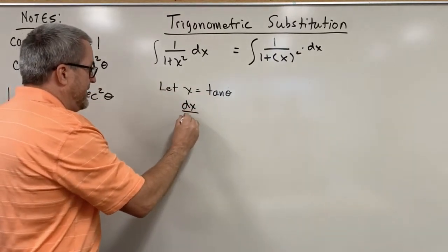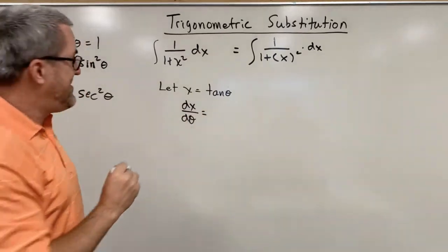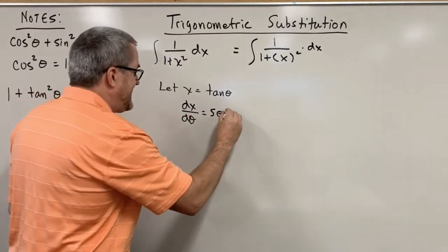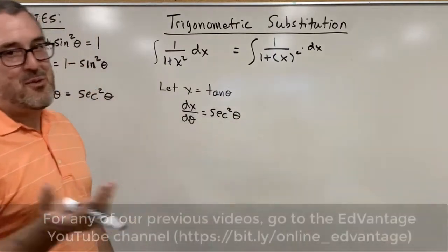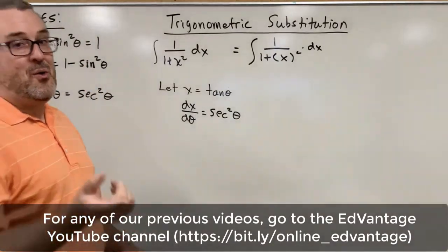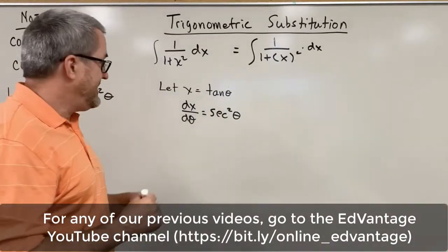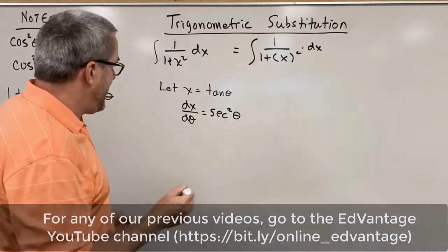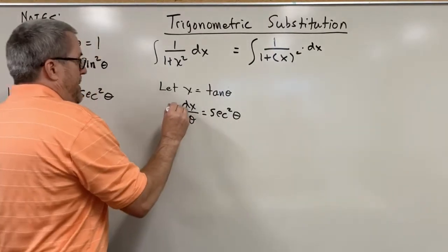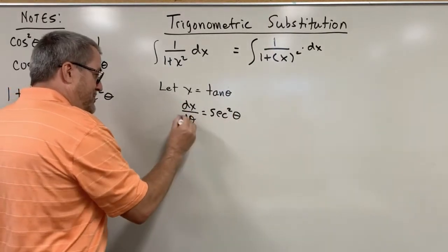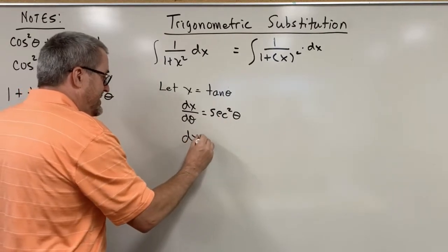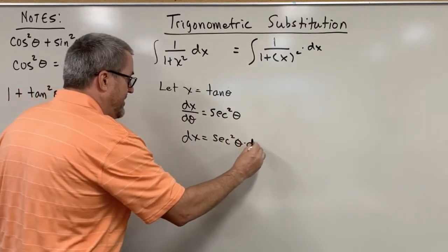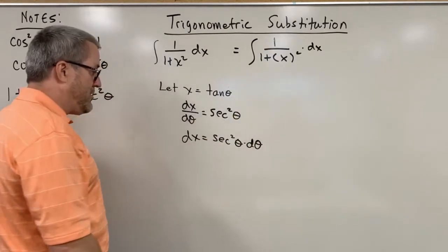The derivative of x with respect to theta - the derivative of tangent of theta is secant squared of theta. You may remember that from Calc 1, or just reference that to remind yourself of why that is, but it's true. Secondly, algebraically, dx then is secant squared of theta d theta, bringing that d theta over.